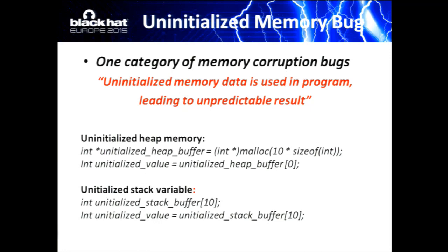Here we have two examples. The first one: we allocate an int array with 10 elements on the heap, and we access the first element of this array without initializing it. This is an uninitialized memory bug on the heap. The second example: we have an int array with 10 elements on the stack, and we access the first element without initializing it. This is a typical uninitialized local variable bug.